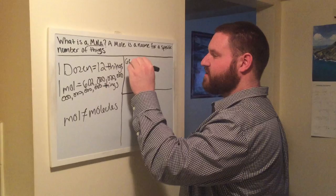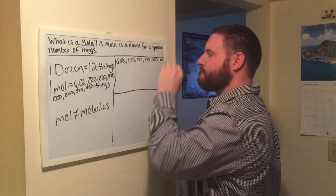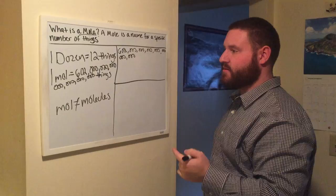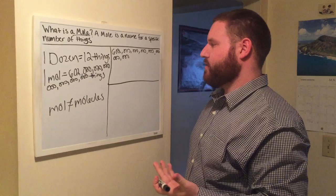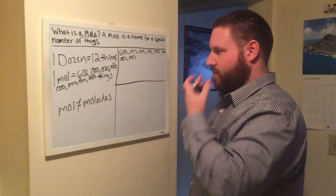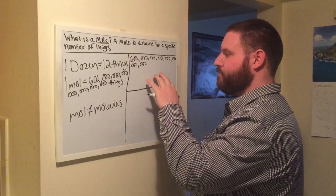Now, when you see this number, six hundred two hexillion, that's very intimidating. It's scary to think, okay, that's a large number. How am I going to work with that? How am I going to put that in my calculator and figure out an answer for our chemistry problem?